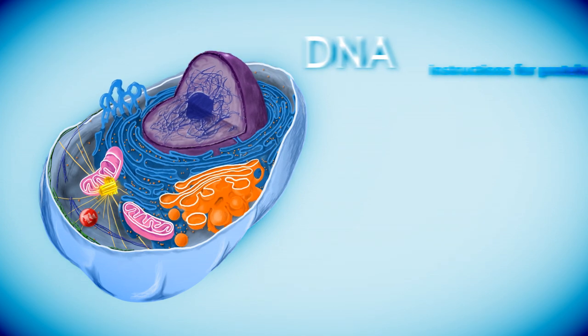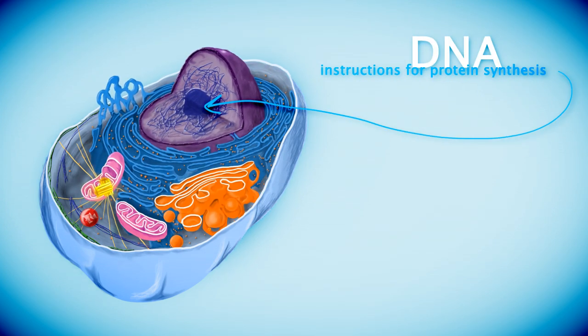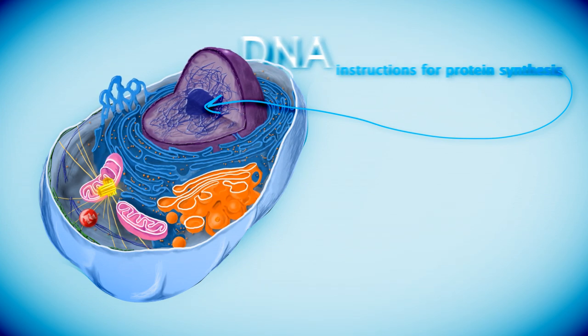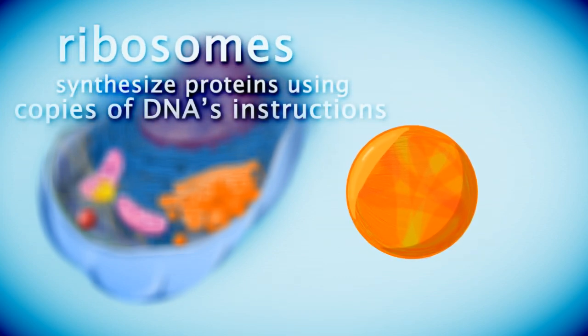DNA is basically a set of instructions for ribosomes to follow. It contains genes that code for a specific protein. Ribosomes synthesize proteins. They can either be freely floating in the cell or attached to the endoplasmic reticulum.